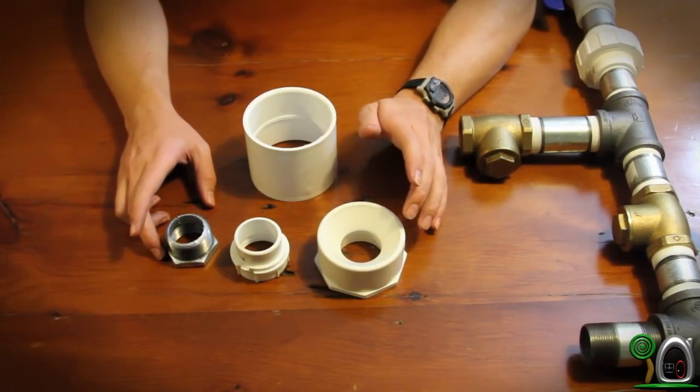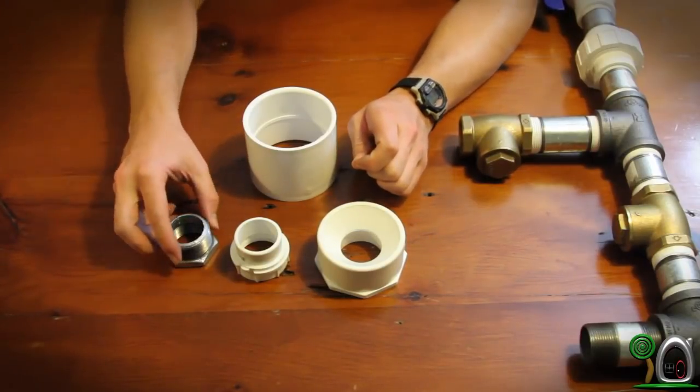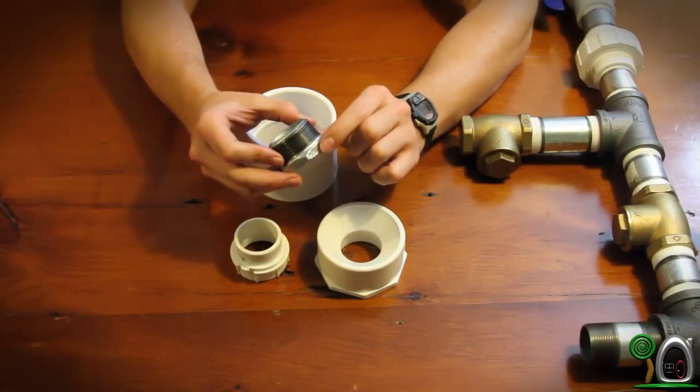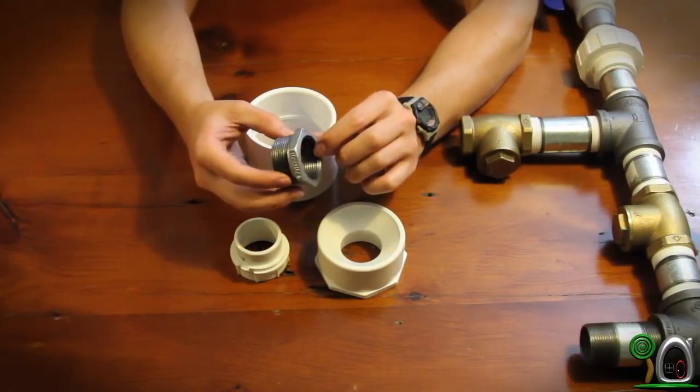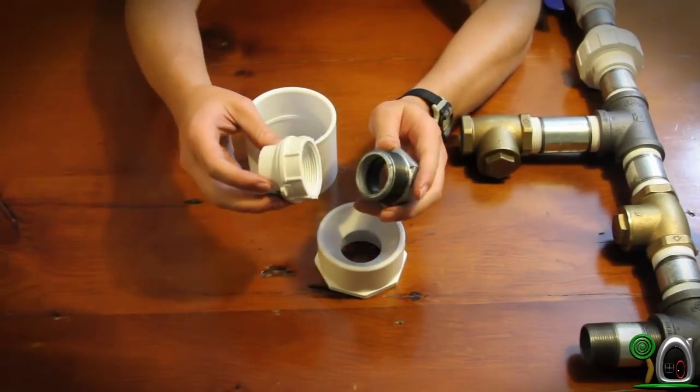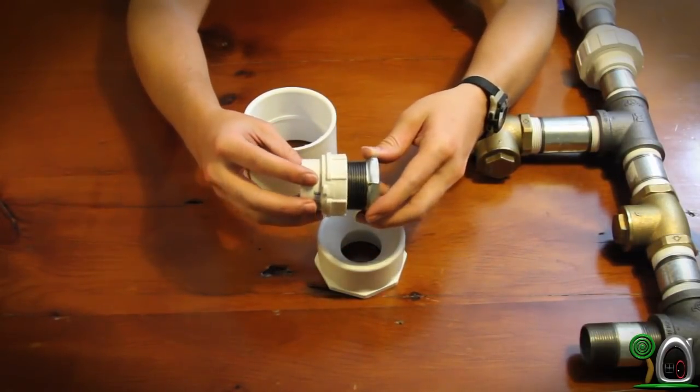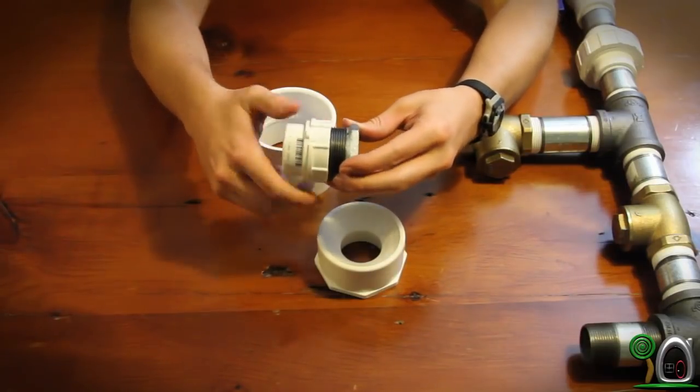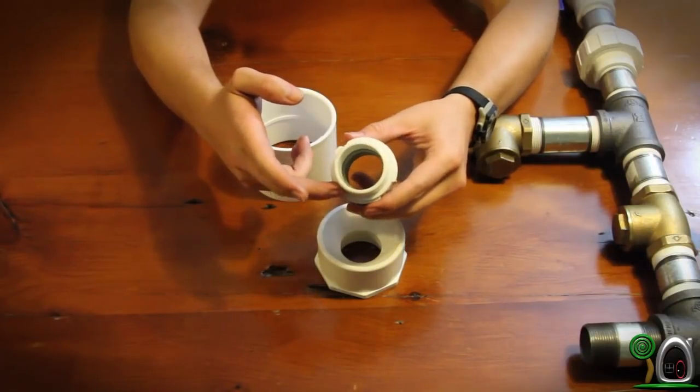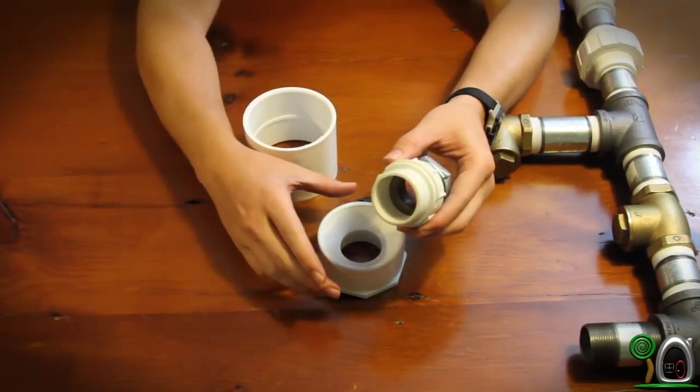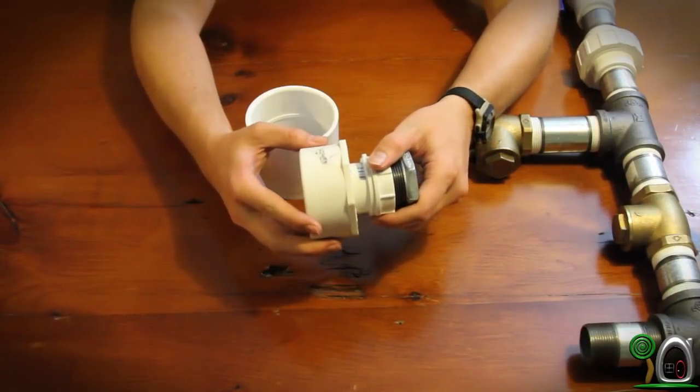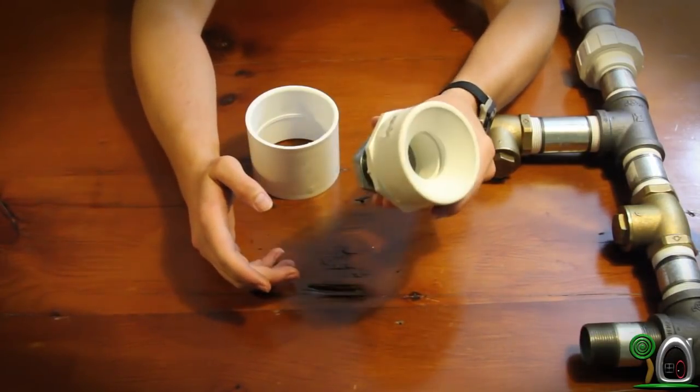So for step 13, what I have done is I have found a bushing, a metal bushing, that goes from one and a quarter thread to one and a half thread. Then I found a PVC pipe, one and a half thread to one and a half glue end. From this one and a half glue end, I found a one and a half inch to three inch bushing. And from this bushing.